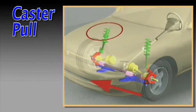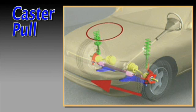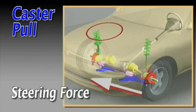In this example, caster on the right side has the lesser positive position and may cause steering force to the right.